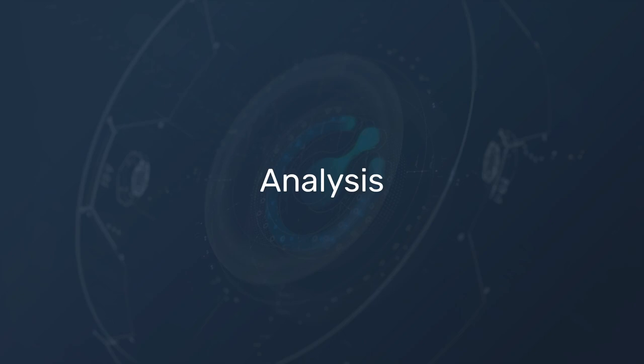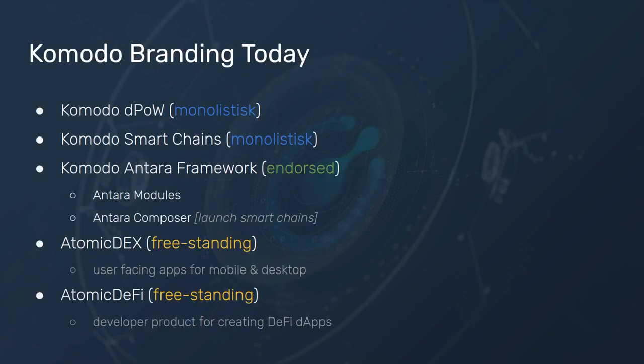In the past week we have been doing an analysis of our situation — what are our product brands, what are we offering, and how are we positioning them. We have D-POW, with a monolithic understood direction associated with the Komodo parent brand. We have Smart Chains — and here it's kind of unclear if this is even a product brand or just a term we use, but I put it here just to showcase that there's some confusion.